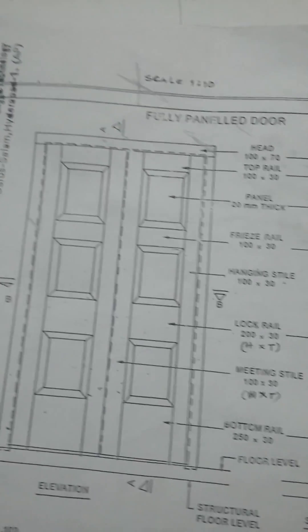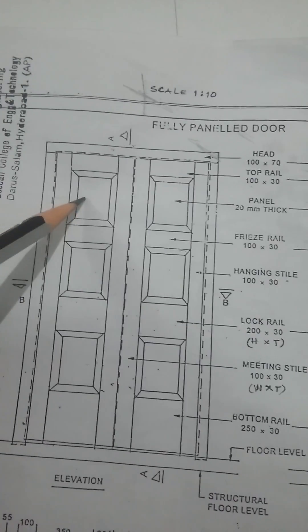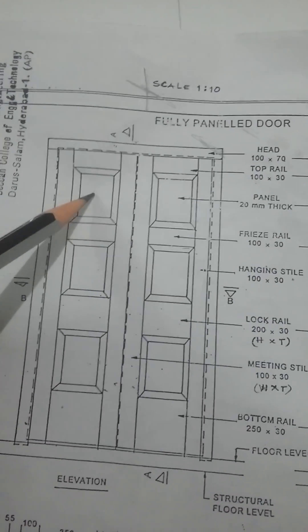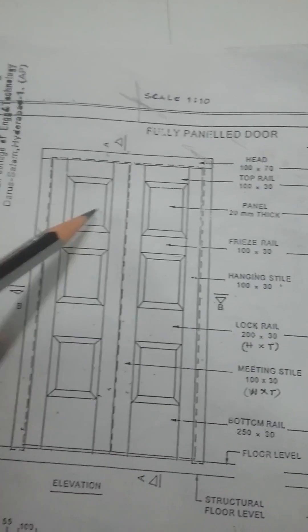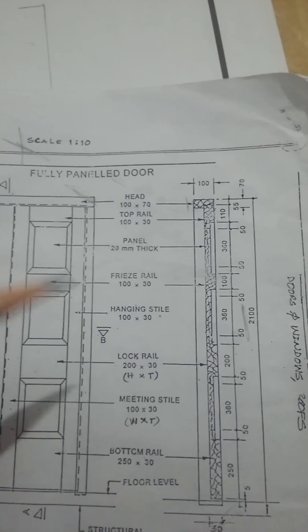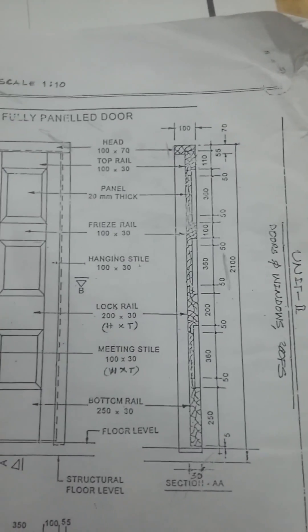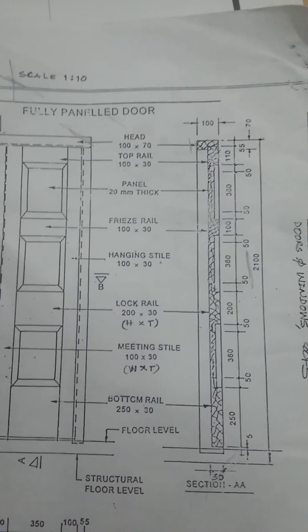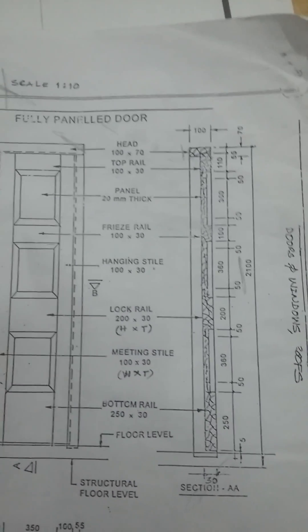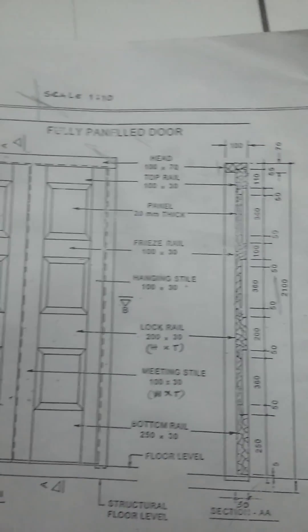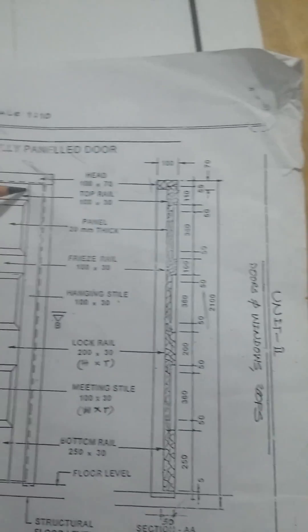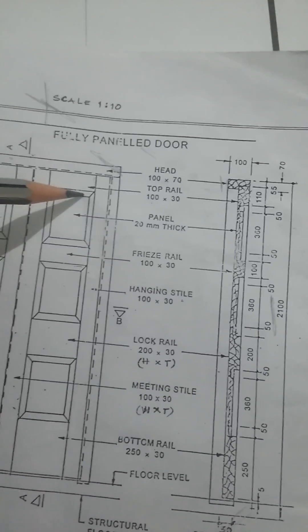These are the other sections. This is the front elevation — the front view of the door. This is the side view, and this is the top view. From these measurements we can draw the fully paneled door easily. From here to here is 110, and from here to here is 55.